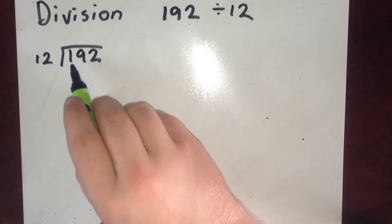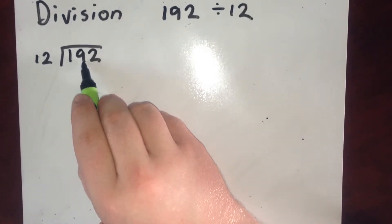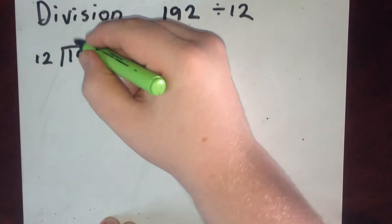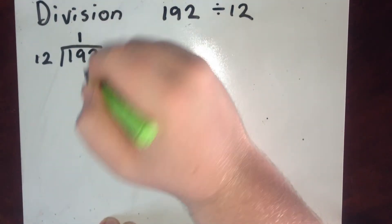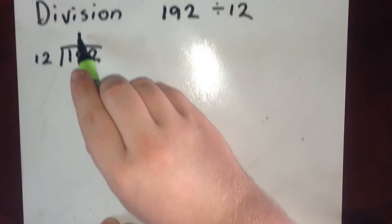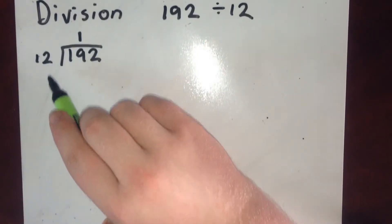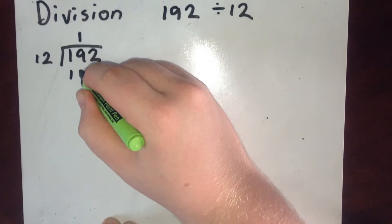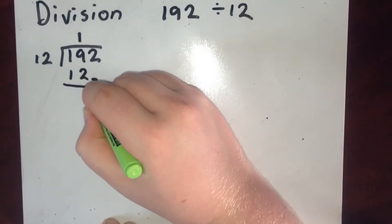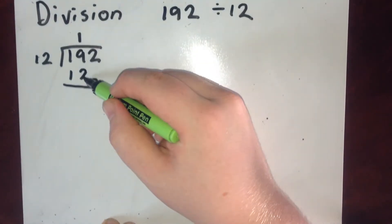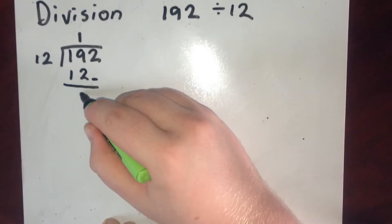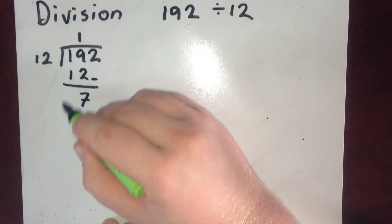I look at how many 12s go into 19 to start with. There's one 12 in 19. Then I do 1 multiplied by 12 is 12. So I write 12 down underneath and I take away. So I do 19 take away 12. 9 take away 2 is 7. 1 take away 1 is 0.